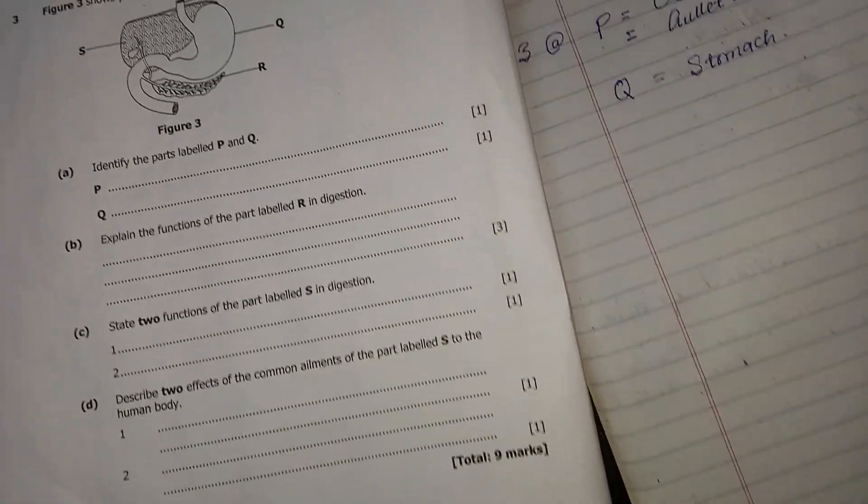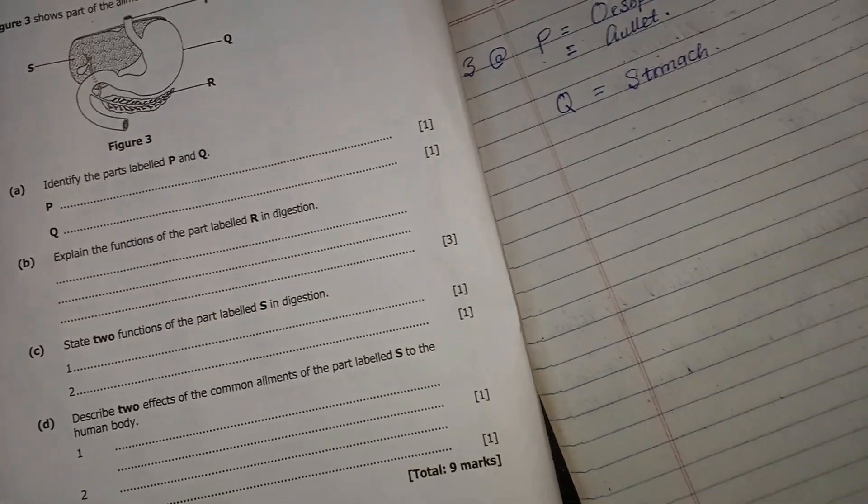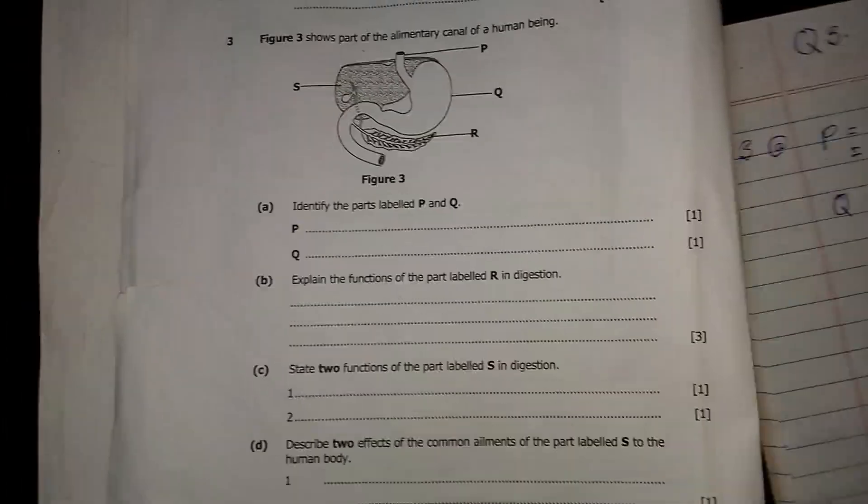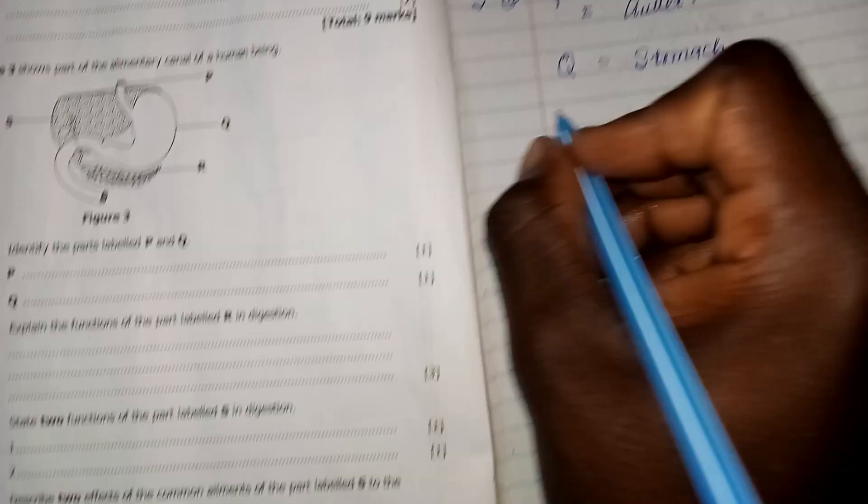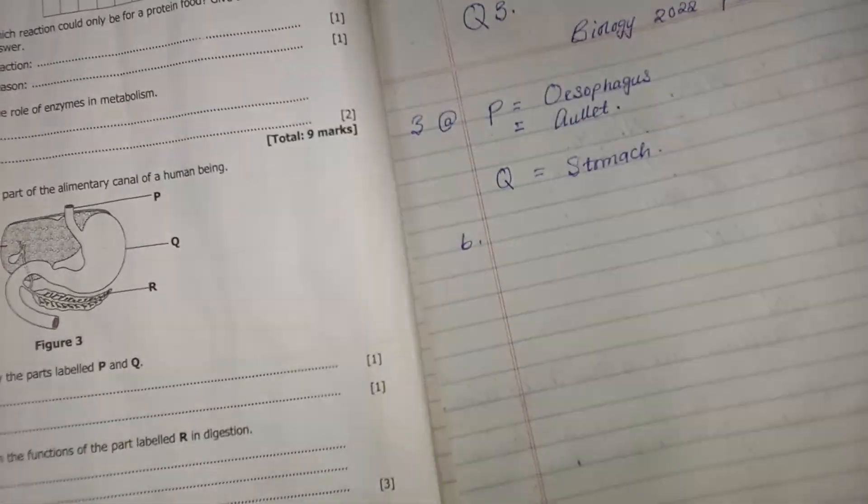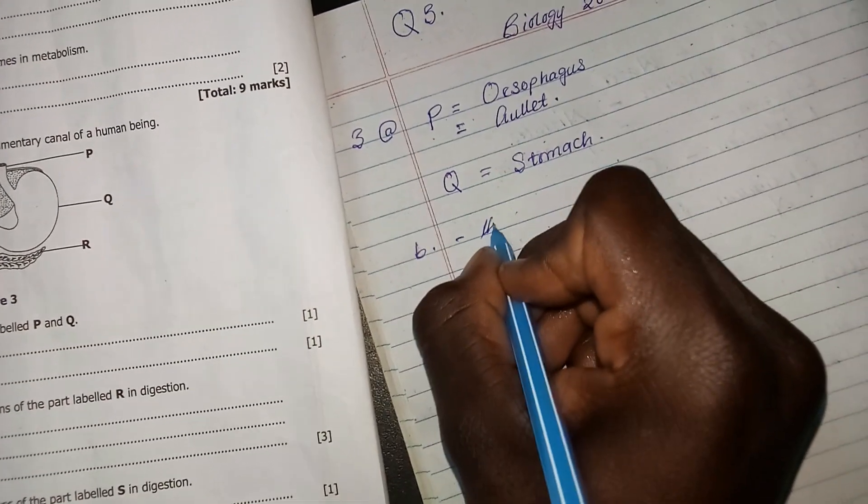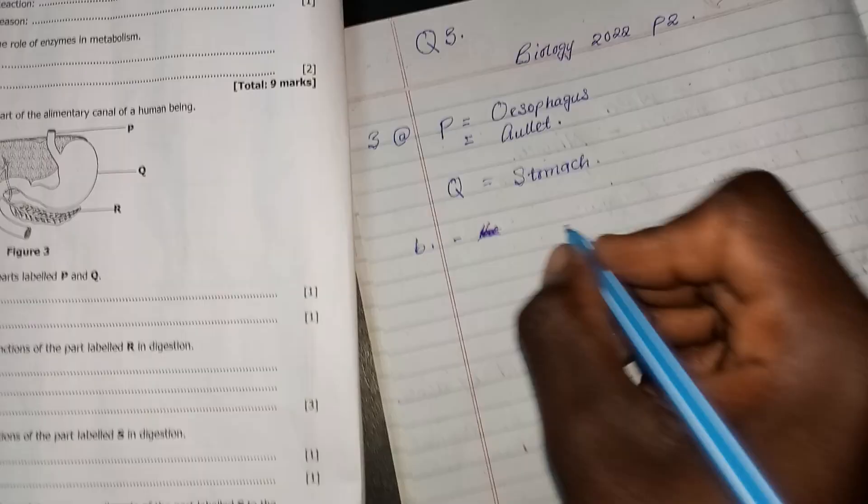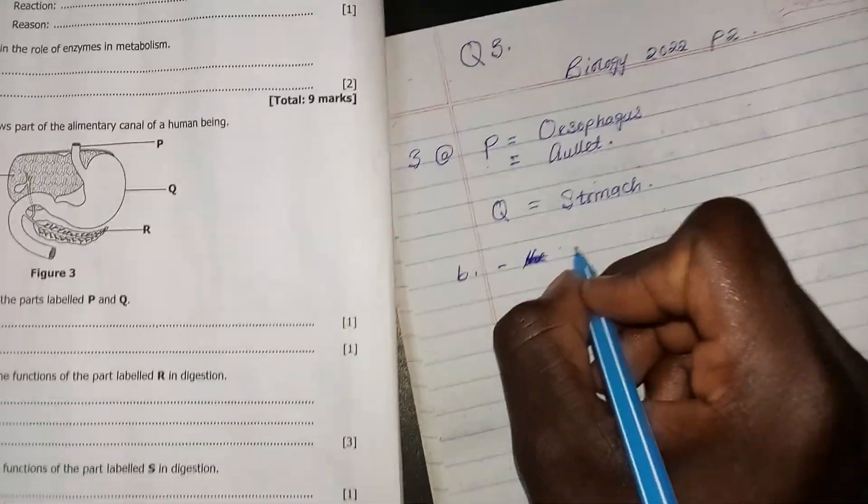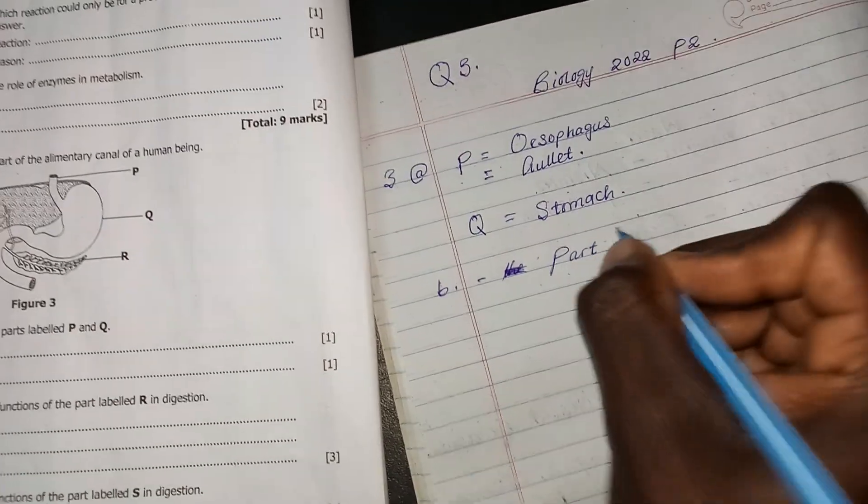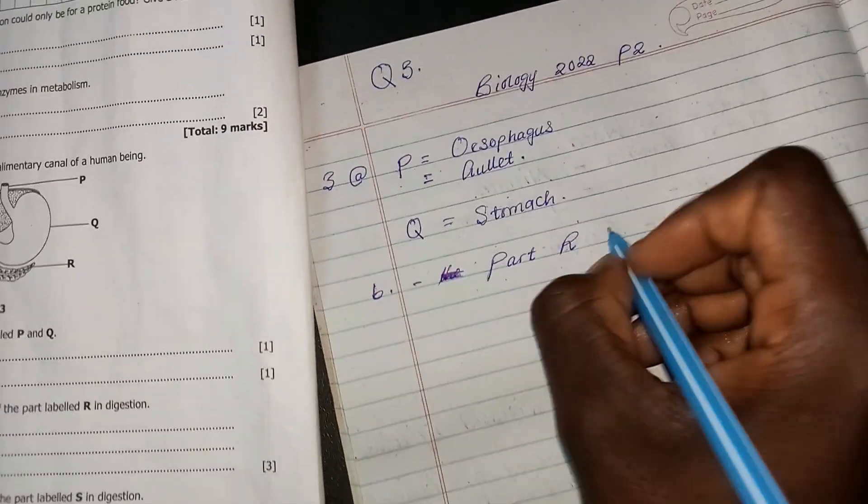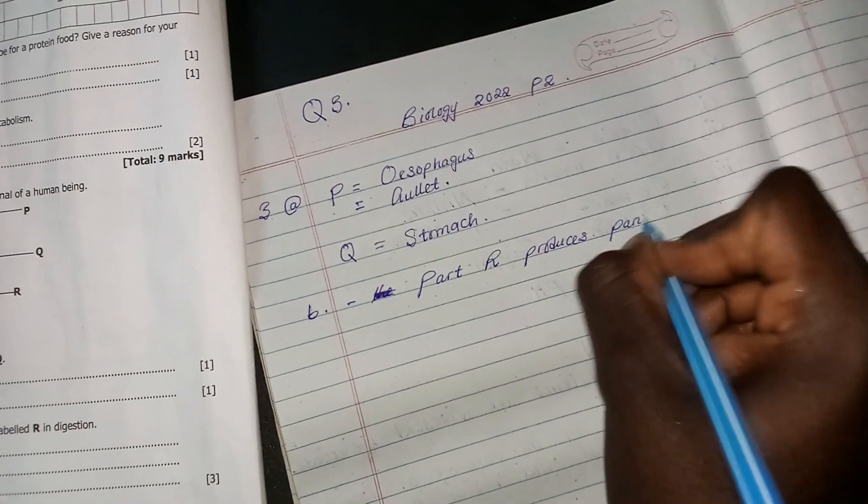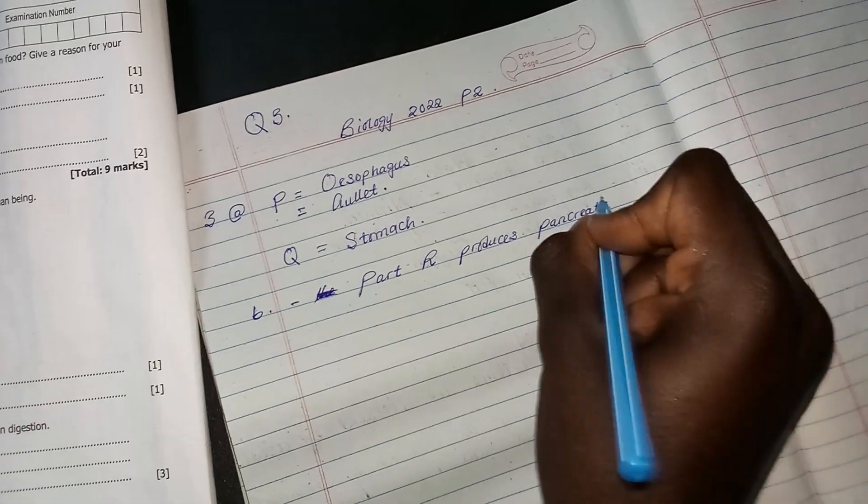The pancreas produces pancreatic juice. So you should not state the name of the part they have asked. You can just say part R produces pancreatic juice.